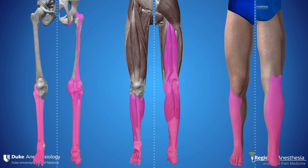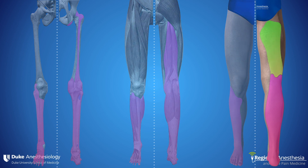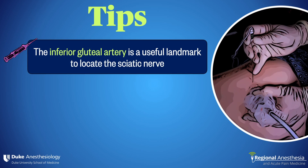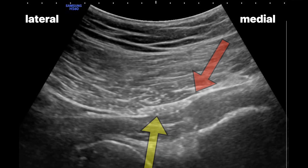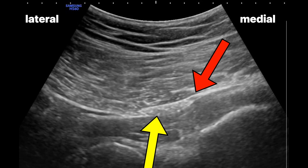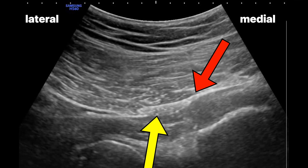Catheters work well here too, as muscle tends to hold them in place. Note that a block of the posterior cutaneous nerve of the thigh can occur but it's not guaranteed. Here are some tips for the subgluteal sciatic nerve block. First, when you're trying to decide between hyperechoic smudge A and hyperechoic smudge B, the inferior gluteal artery can be a useful landmark to ensure that you're at least aiming for the right plane. Here we see the nerve and the artery side by side, as is often the case.